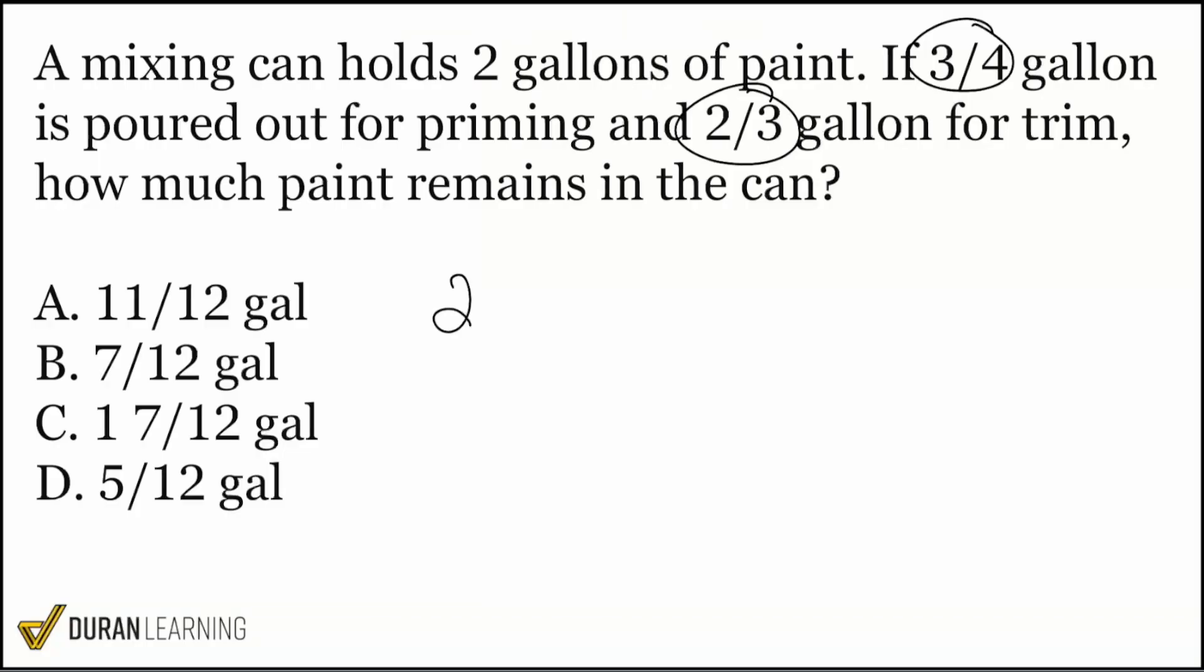We see that the mixing can holds two gallons of paint. So we start with the two gallons and then we're going to be subtracting the three quarters of a gallon and then subtract the two thirds of a gallon. And there we are. So with that said, now that we're here, everybody, there are two ways that we can really go about this. One is changing this whole number two into a fraction immediately and then getting all three fractions to have the same denominator. Or we can combine these two fractions right now and then deal with the two later. And that's actually going to be my preference. I would rather combine these two right now only because dealing with a whole number, it's going to be really easy to turn to whatever denominator this becomes.